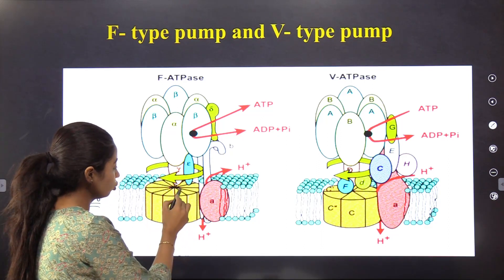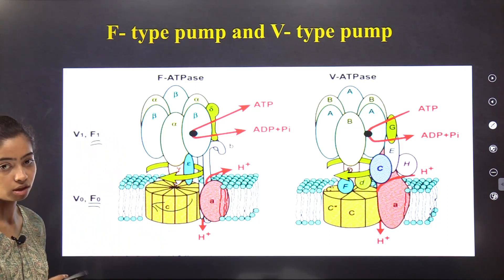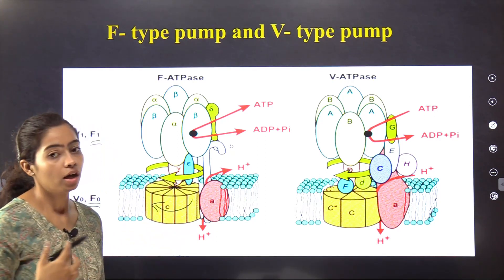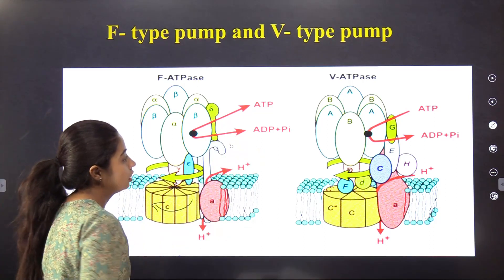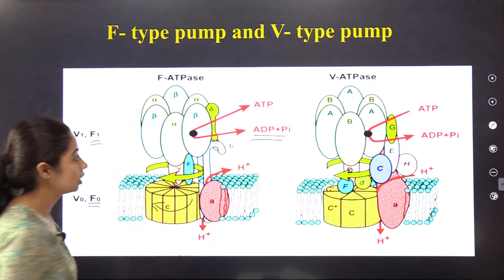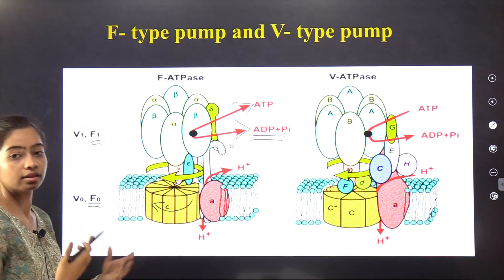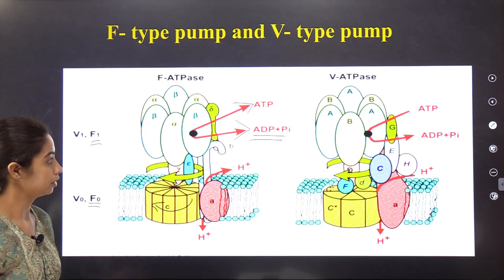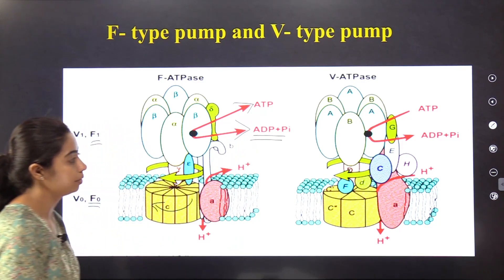The F0 portion rotates in such a direction that ATP hydrolysis occurs — ATP is broken down into ADP and inorganic phosphate. There are two-headed arrows here, indicating that both ATP synthesis and ADP plus inorganic phosphate formation can occur.